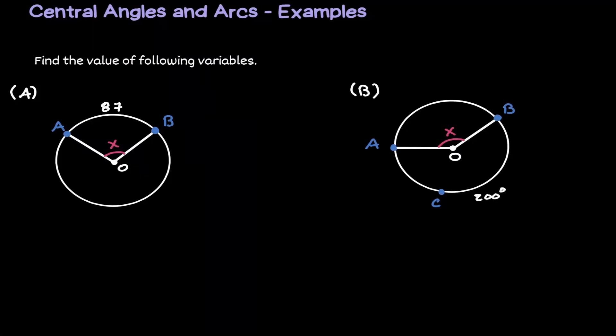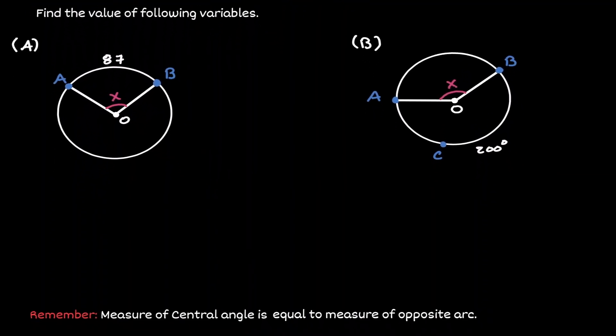Welcome. Let's discuss some examples where we use the properties of central angles and arcs in a circle. We always want to remember that the measurement of the central angle is always equal to the measurement of the opposite arc.